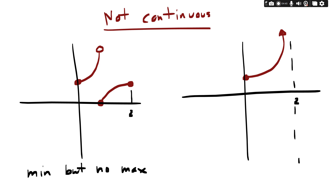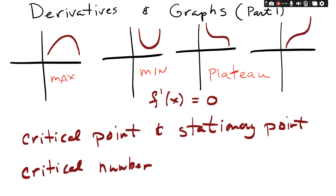Now let's look at what happens to derivatives and graphs. Part one: whenever you have a derivative that is equal to zero, what you have is called a critical point, sometimes called a stationary point, sometimes called a critical number — three different ways to say the same thing.